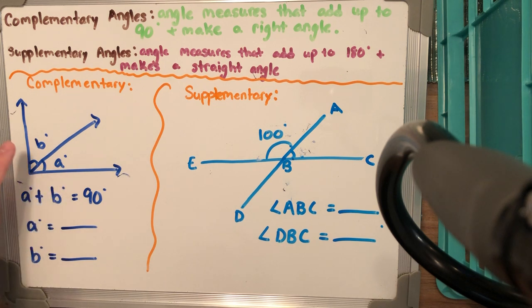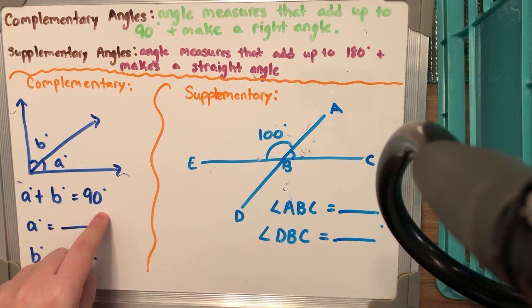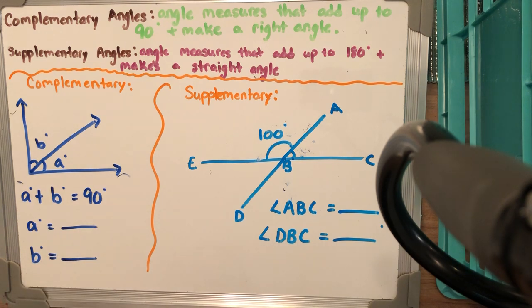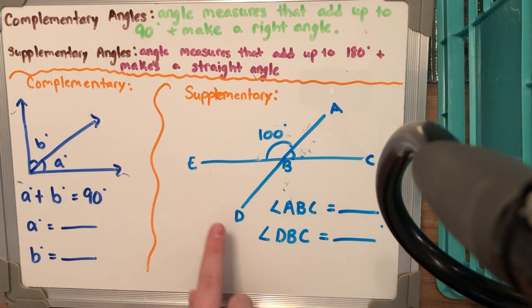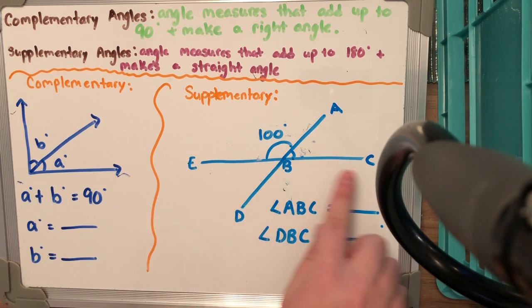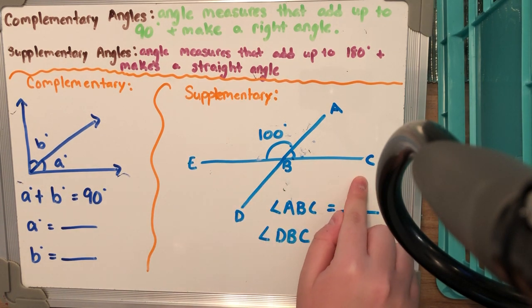We have angle A and angle B. When we have angle A plus angle B we know it's going to add up to 90 degrees, and then we figure out what exactly angle A is worth and how much angle B is worth. Usually they'll give us one of the angles and we subtract that angle from 90 to figure out what the missing angle is.